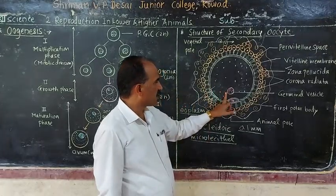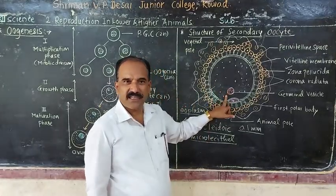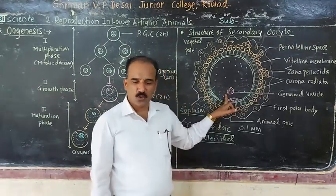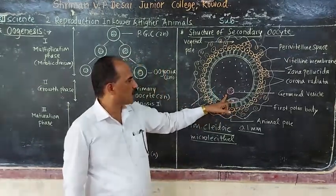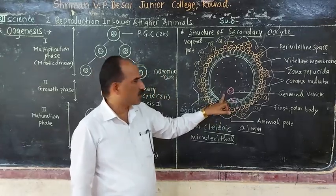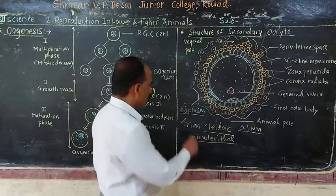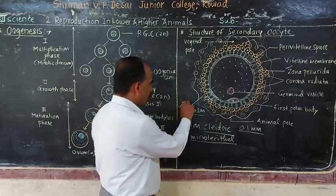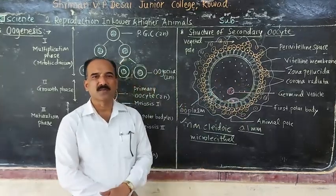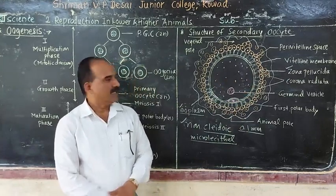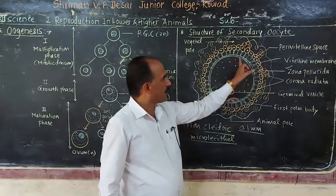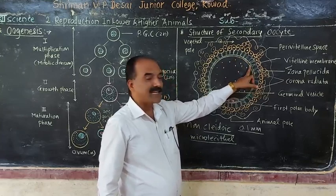The nucleus of the egg is large and is called the germinal vesicle. The egg is surrounded by cytoplasm, also known as ooplasm. The membrane of the egg is known as the vitelline membrane.